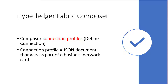Composer uses what's called a connection profile, which defines the connection for Composer. A connection profile is a JSON document, and it acts as part of a business network as well. A business network card is a combination of the profile metadata and some identity information — basically metadata around the business network — and the goal is to make connecting to the business network easier.